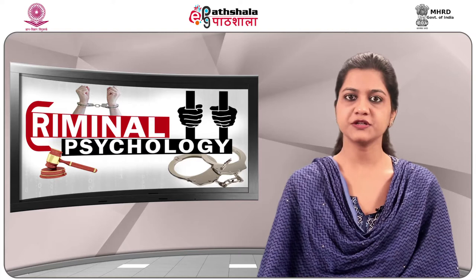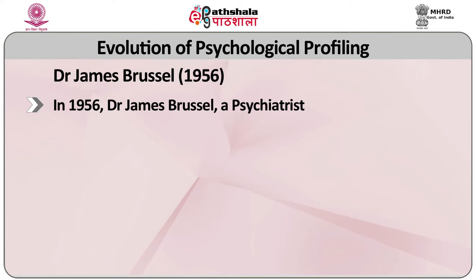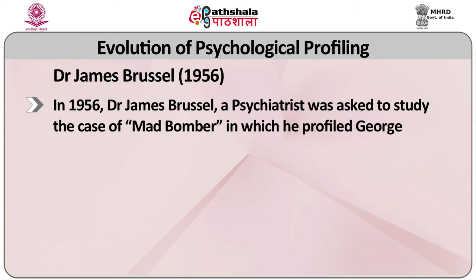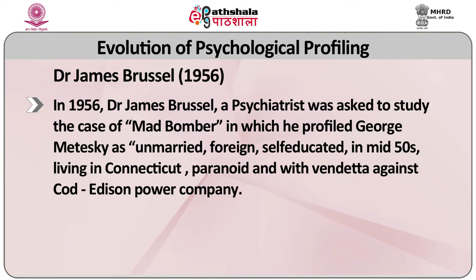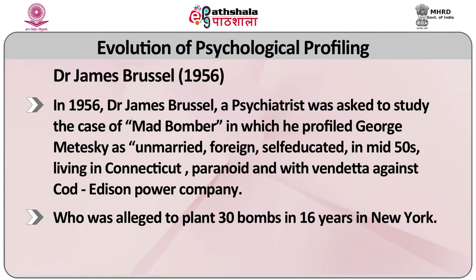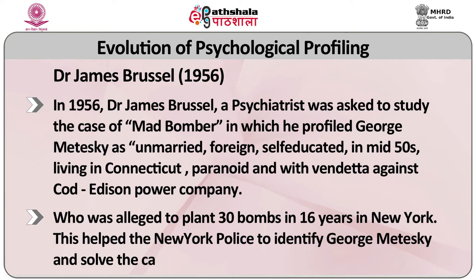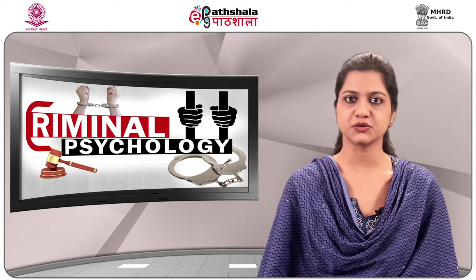The profile of President JF Kennedy was done by Khrushchev. Thereafter, a lot of profiling work was done which mainly relied on intuition and formal studies. In 1956, Dr. James Brussell, a psychiatrist, was asked to study the case of the Mad Bomber, in which he profiled George Metisky as unmarried, foreign, self-educated, in his mid-50s, living in Connecticut, paranoid, and with a vendetta against Con Edison Power Company, who was alleged to have planted 30 bombs in 16 years in New York. This helped the New York police to identify George Metisky and solve the case.